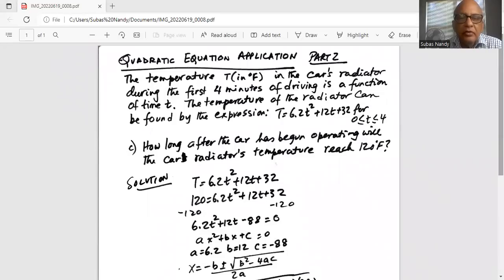The temperature in degree Fahrenheit in the car's radiator during the first four minutes of driving is a function of time t. The temperature of the radiator can be found from the expression T = 6.2t² + 12t + 32 for t between 0 and 4. Part C asks how long after the car has begun operating will the car's radiator's temperature be 120 degree Fahrenheit.